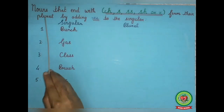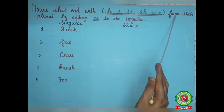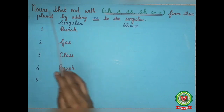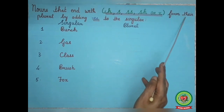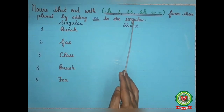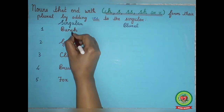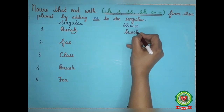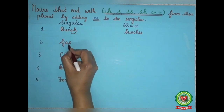Nouns that end with 'ch,' 's,' 'ss,' 'sh,' or 'x' form their plural by adding 'es' to the singular. Read the first singular noun — 'bunch.' It ends with 'ch,' so we will make it plural by adding 'es' to it; 'bunches' will be the plural noun. Next example — 'gas.' The singular noun 'gas' ends with 's,' so we will make it plural by adding 'es' to it; 'gases' will be the plural noun.